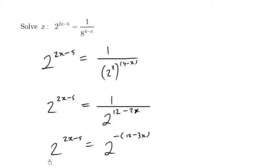So what I have here is the same base and different exponents. These exponents must be the same. So we have 2x minus 5 equals negative 12 minus 3x.